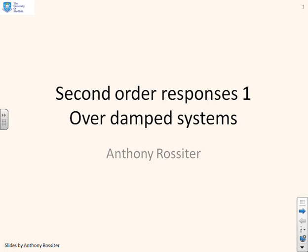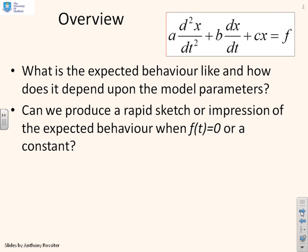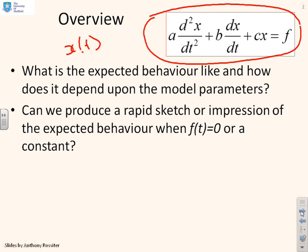This is the first video on second-order responses. The focus will be on overdamped systems. Let's consider that we have equations or models of this form: a d²x/dt² plus b dx/dt plus cx equals f. What we want to know is how does x(t) behave, and in particular, how does the behavior depend upon the model parameters a, b, and c? We might want to produce a rapid sketch or impression of this behavior for x(t) when f(t) is 0 or a constant.